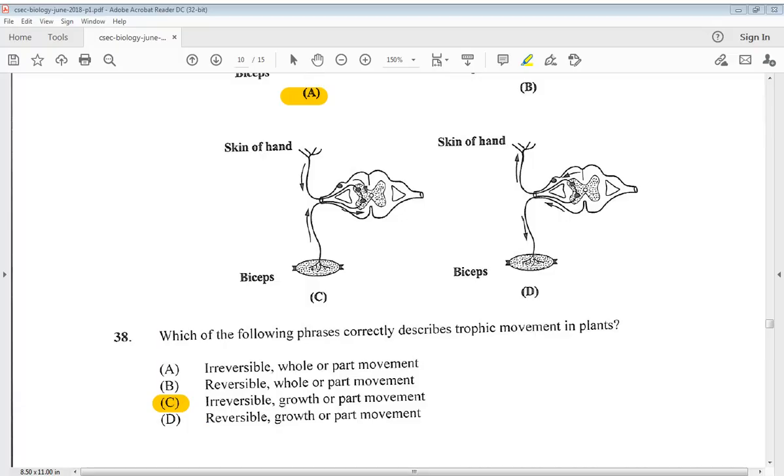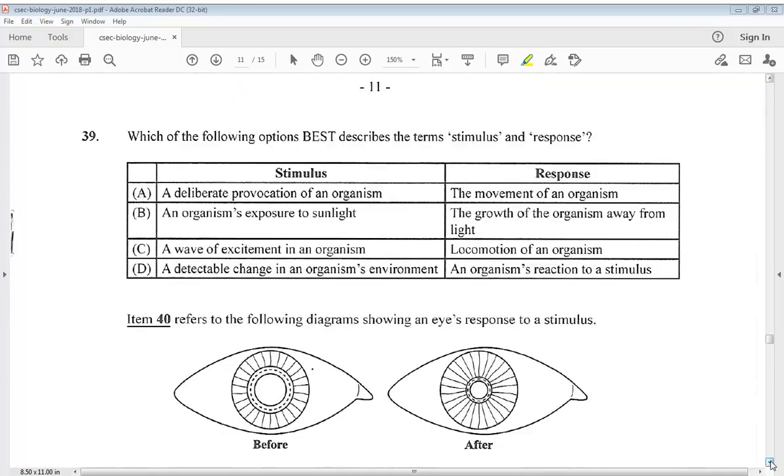Let's go to number 39. Which of the following options best describes the term stimulus and response? A. Stimulus: a deliberate provocation of an organism. Response: movement of an organism. B. An organism's exposure to sunlight. The response: growth of the organism away from light. C. A wave of excitement in an organism. The response: locomotion of an organism. D. A detectable change in an organism's environment. The response: an organism's reaction to a stimulus. So 39 would be D.